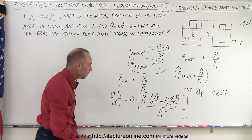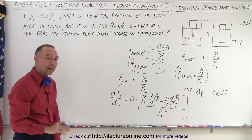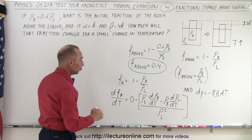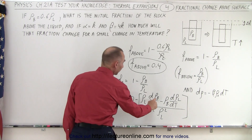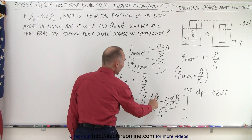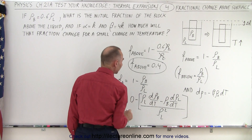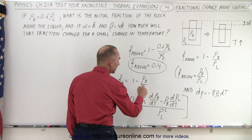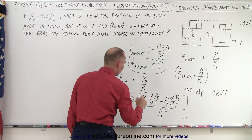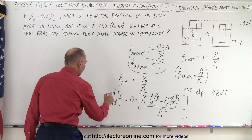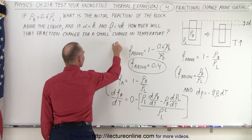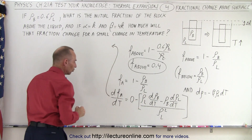Now let's simplify, knowing that the density of the block is 0.6 times the density of the liquid. We'll make some substitutions using the DDT terms.